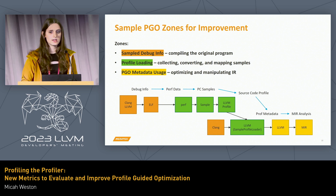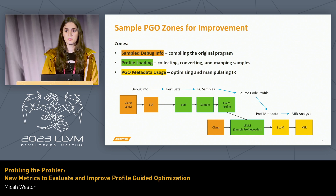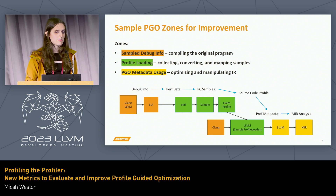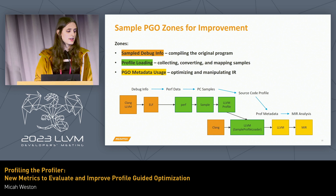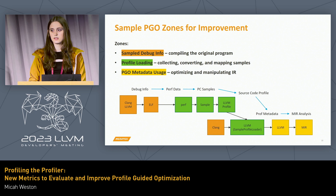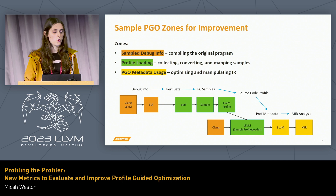The first major area is debug information — sample compilation is directly tied to generating a profile, so it needs to be accurate in order to get a better profile. The next stage is profile loading, where a lot of complexity lies in converting the profile, loading it, and then mapping it onto the CFG. There's been a lot of notable work in the community here and a lot of gain to be had. Lastly, PGO metadata usage — this is where optimization passes try to use it, manipulate it, and also keep things around when they might accidentally be deleted.